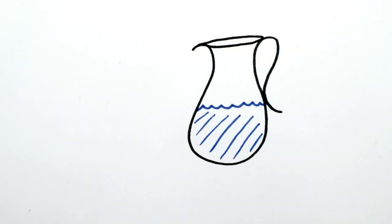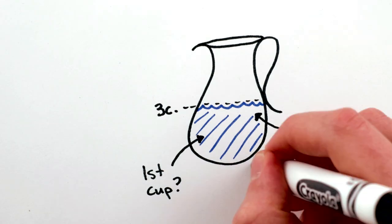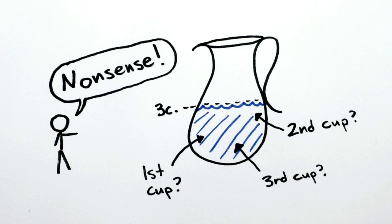It's like if you have a jug with three cups of water in it, it's easy to tell that there are three cups of water, but which is the first cup? The second, or the third? Those questions don't even make sense.